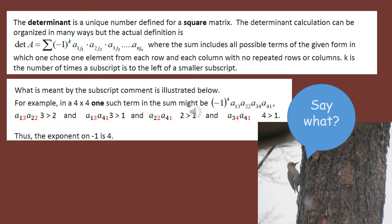A textbook is going to define a determinant as follows. With many different mathematical ideas, sometimes when you actually try to put it in words, it becomes much more complicated sounding than if you were having somebody demonstrate what's going on. The textbook definition is that a determinant is a unique number defined for a square matrix — you only find determinants for square matrices. If a matrix is not square, there is no definition for the determinant.